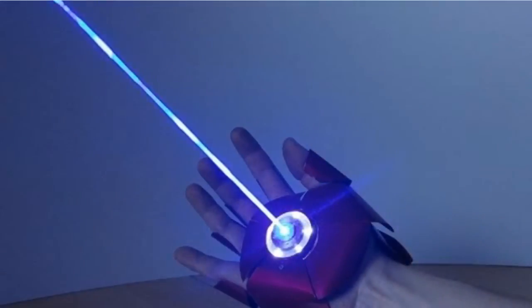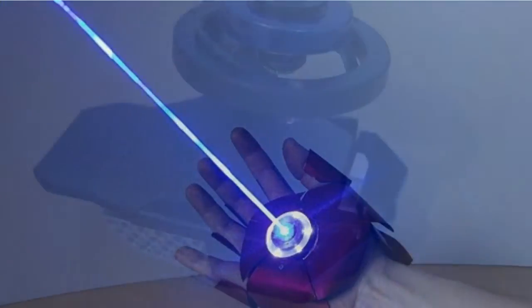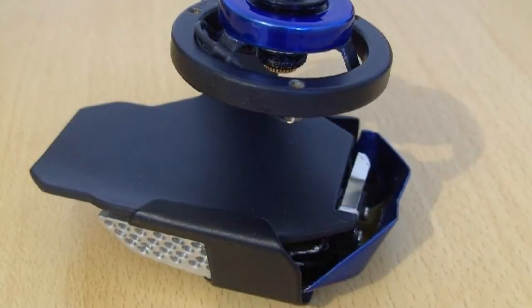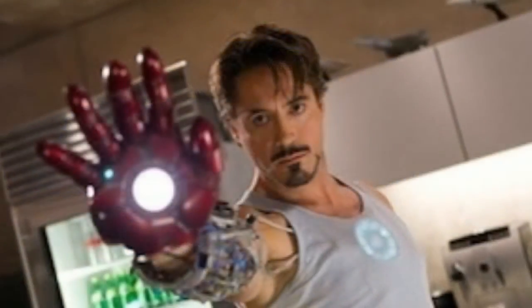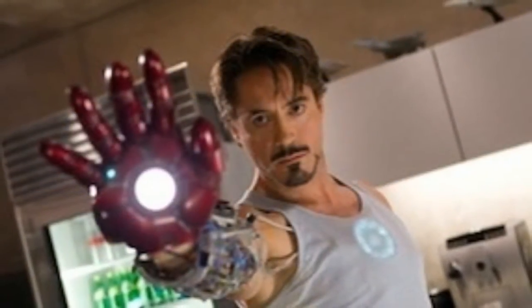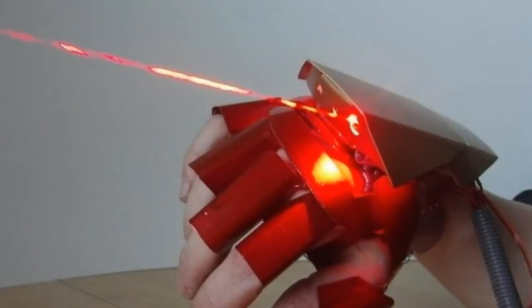Most impressively though, Prieb's Iron Man gauntlet has two lasers that can actually do some serious damage. From the palm, a blue 700 milliwatt laser blasts out. You can see Prieb demonstrating how it can blast balloons into oblivion and sear patterns into wood in the video below.